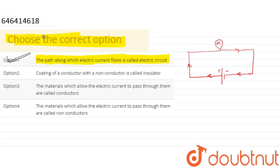Second, let's check: the coating of a conductor with a non-conductor is called insulator. Insulator and conductor are two different materials. Insulators are materials through which electricity does not flow, like plastic or wood.